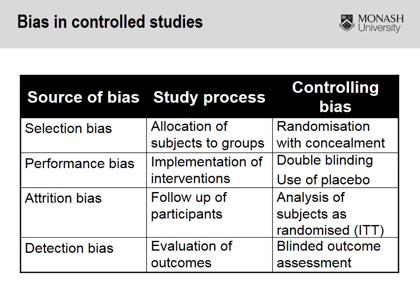Attrition bias relates to the follow-up of participants. What we want to look out for is to ensure the analysis has been conducted according to what we call an intention-to-treat analysis — that is, we've identified why people have dropped out, if they have in fact dropped out, and ensured they're not crossing over or dropping out of the trial without any justification or reasons attached to it.